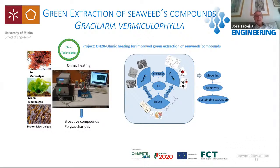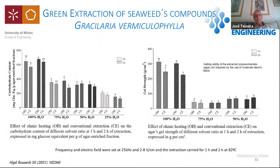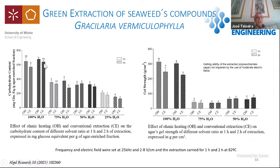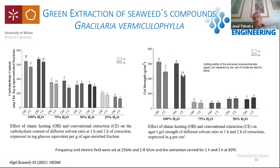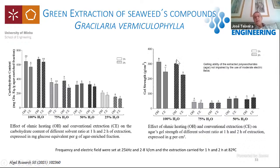Another material we are working with is algae — in this case a particular alga, though we are working with others. What we did here was combine ohmic heating with different ethanol-in-water solutions. Once again, ohmic heating presents some advantage compared to conventional heating, and this advantage and efficiency of the extraction process depends on the ethanol content of the extraction solution. We also wondered whether the gelling ability of the extracted polysaccharide could be affected by ohmic heating — as a matter of fact, it is improved, which is very interesting data.